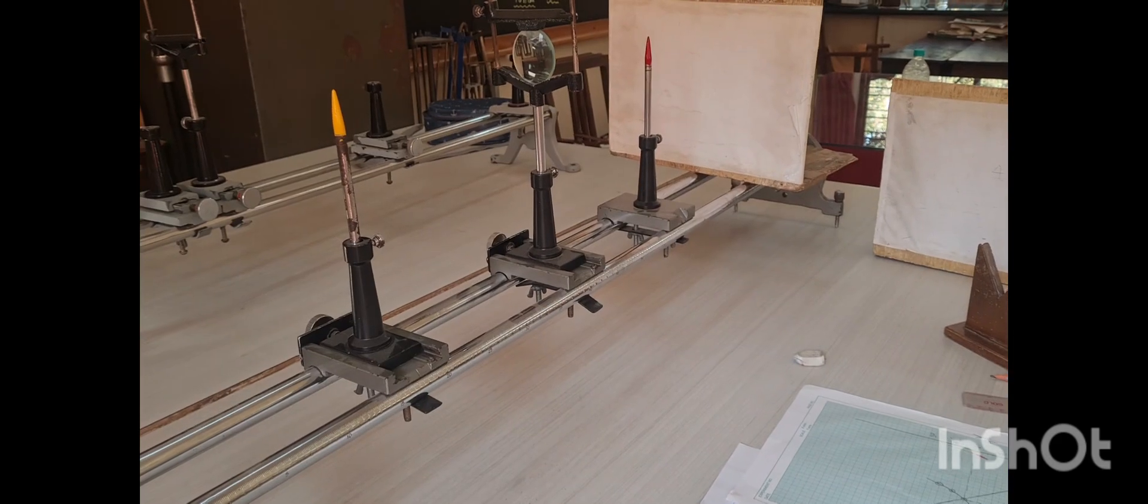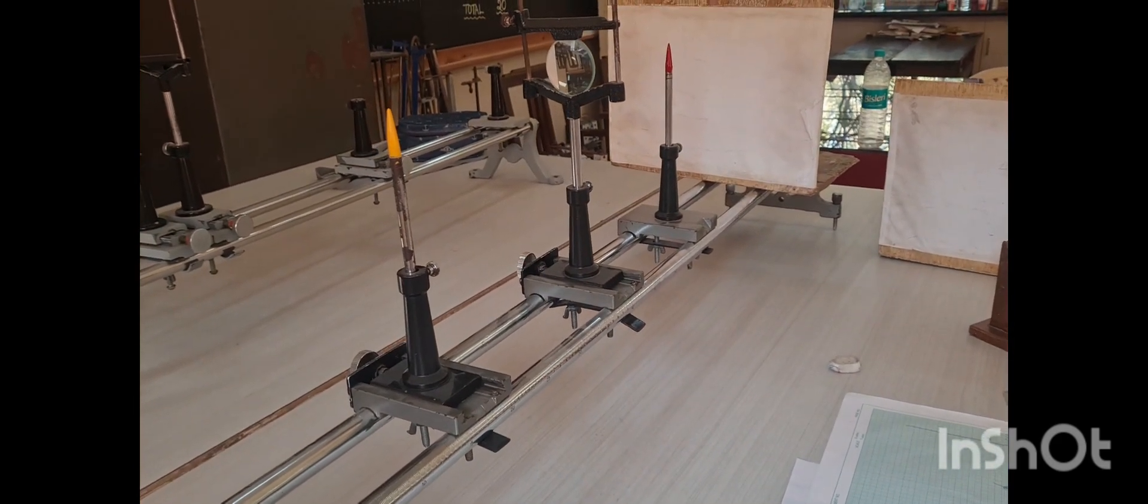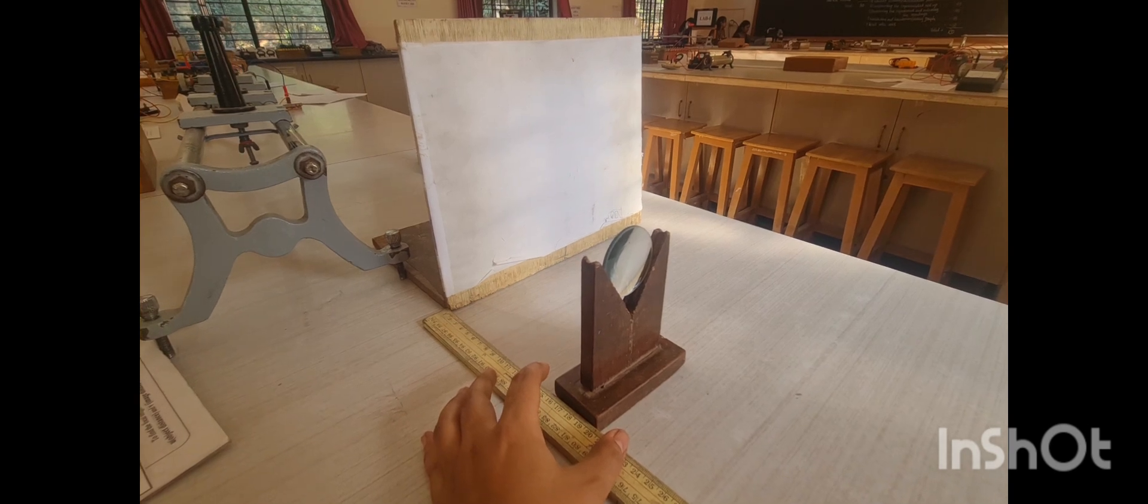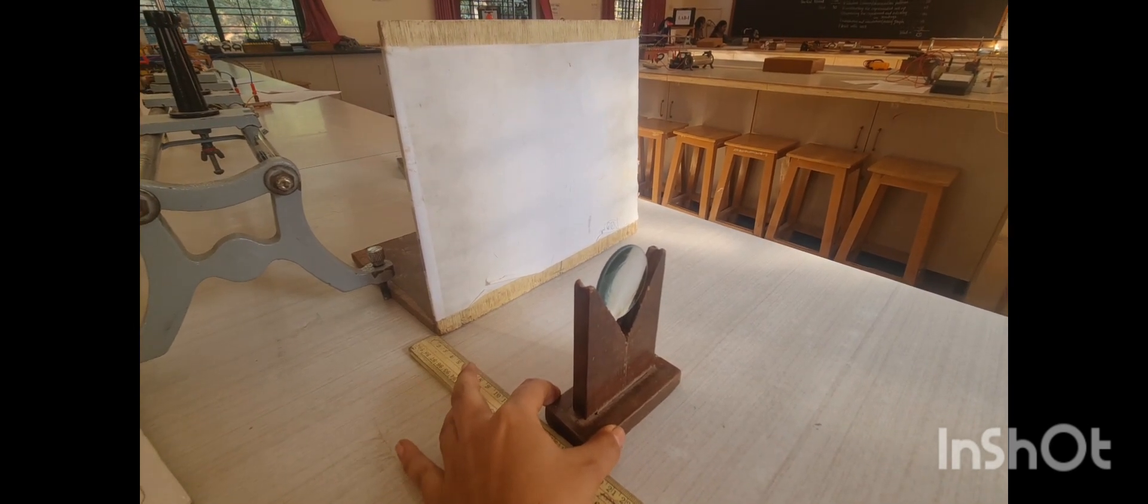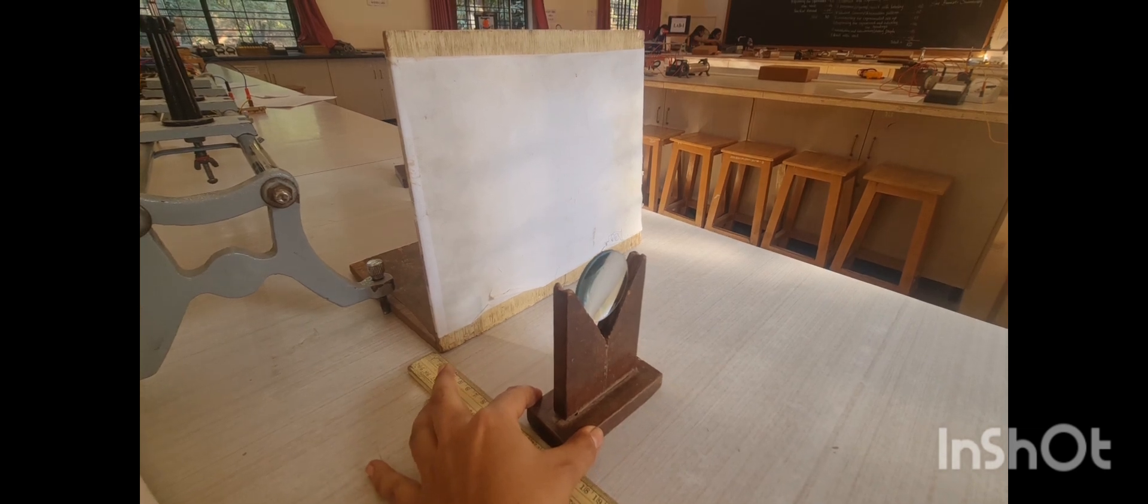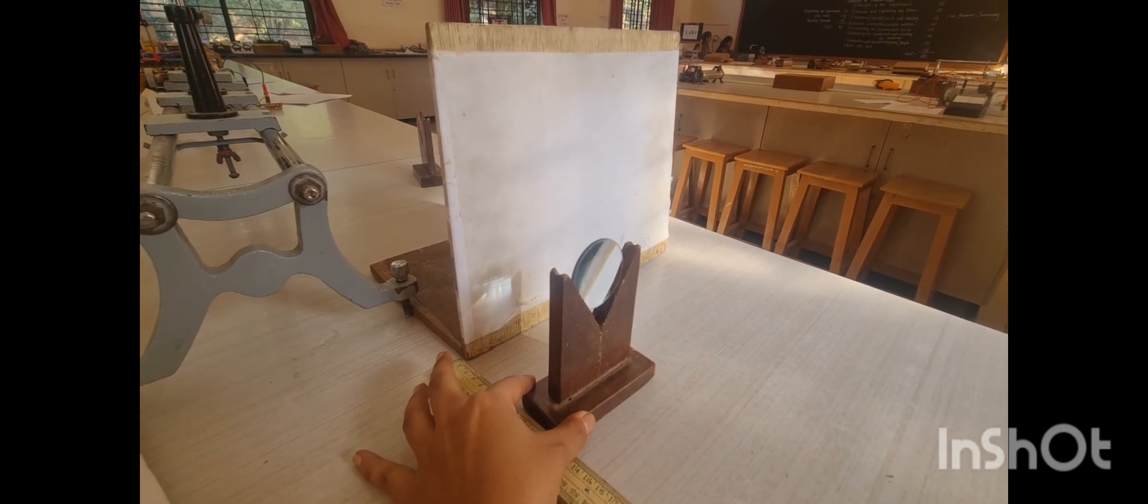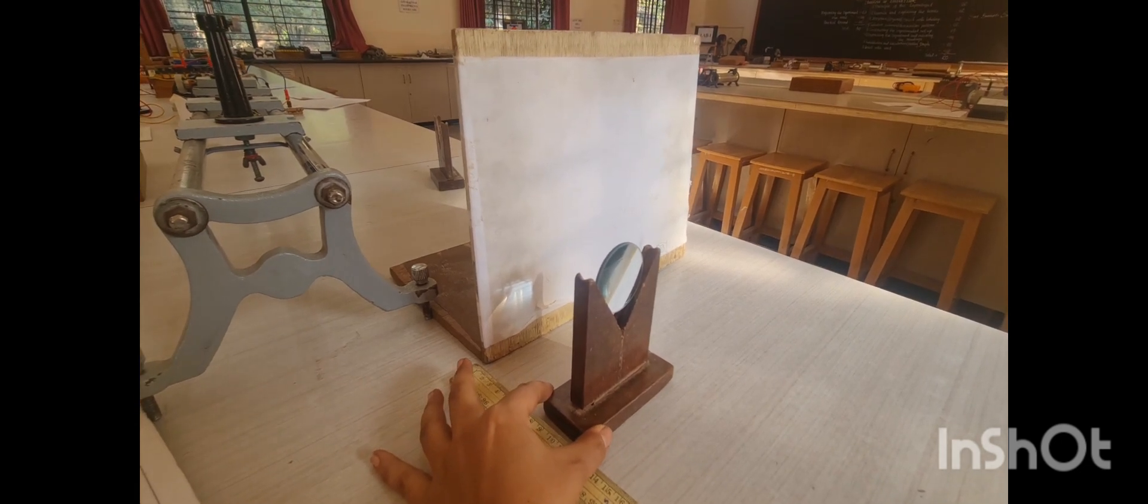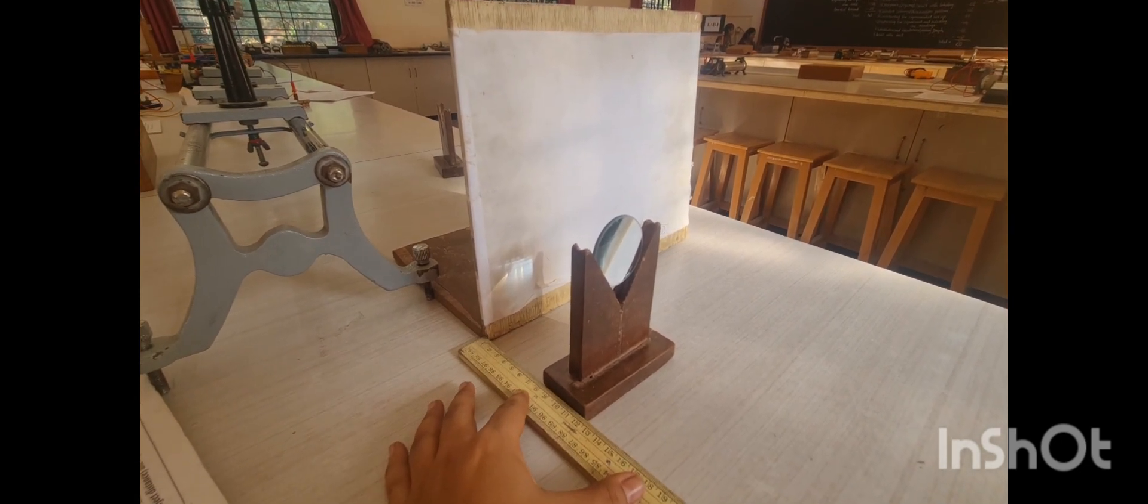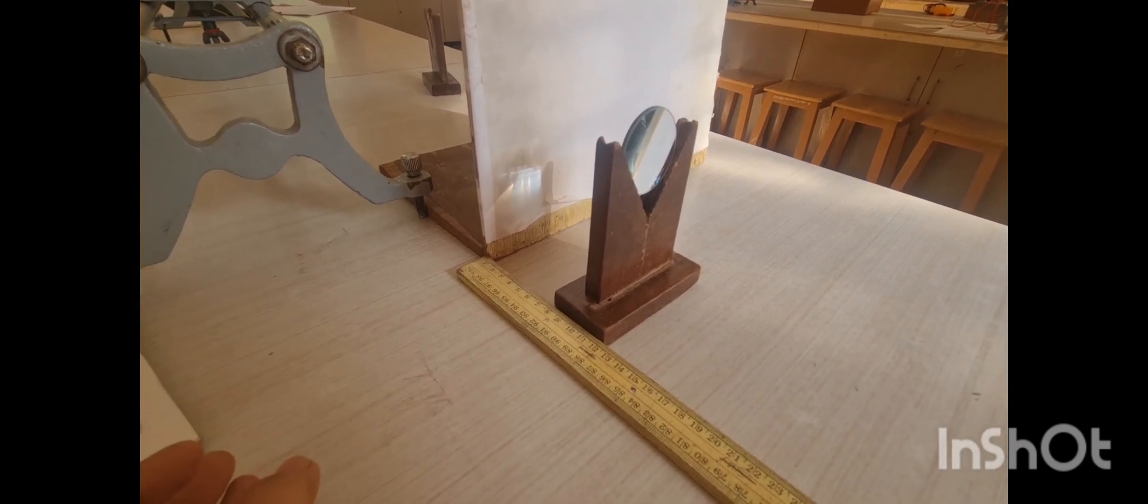This is the experimental setup for the convex lens experiment. The first step is to find the rough focal length. Focus on a distant object and try to get a clear image of that object. At what distance we get a clear image, take that as the rough focal length.